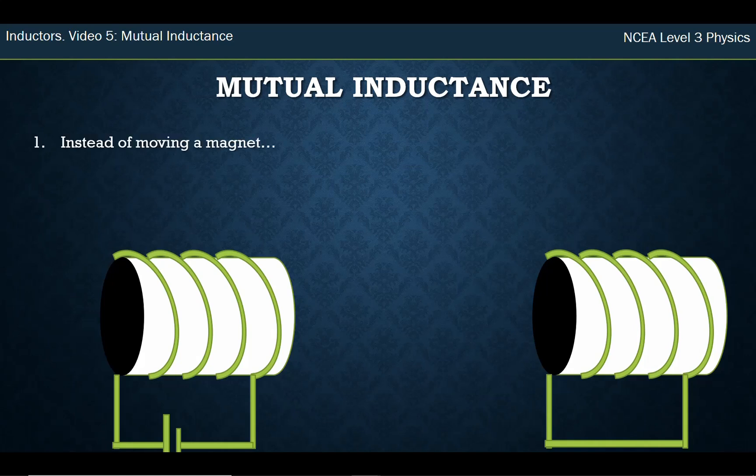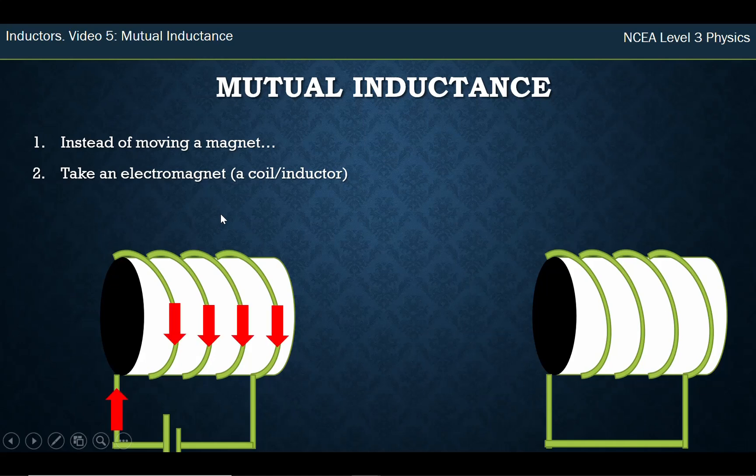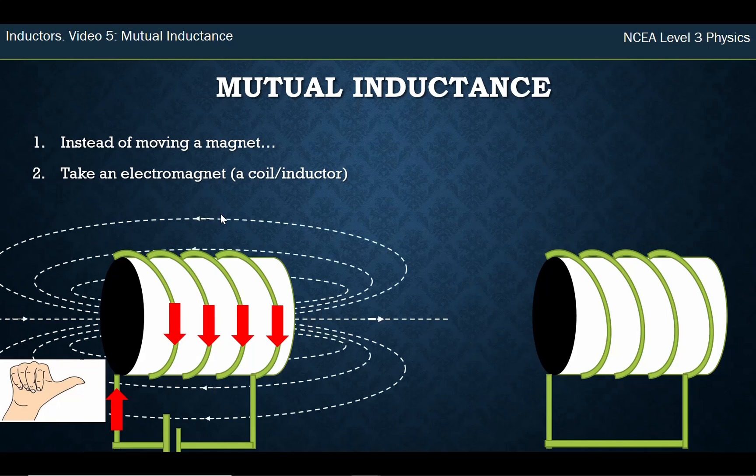We can take this idea one step further. Instead of moving a magnet, on the left here I have an electromagnet. This is a coil of wire with a battery. When I connect the battery to this coil of wire, current flows this way and this way. When current flows in a wire, it generates a magnetic field. I can use my right-hand grip rule for a coil: my fingers follow the current around and my thumb points to the north pole.